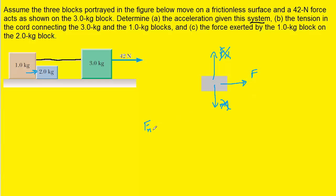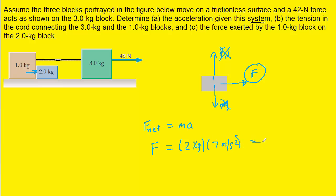This pushing force is the net force. Using Newton's second law, F equals mass times acceleration: F equals two kilograms times seven meters per second squared, giving us 14 Newtons pointing to the right. This is the correct answer to Part C.